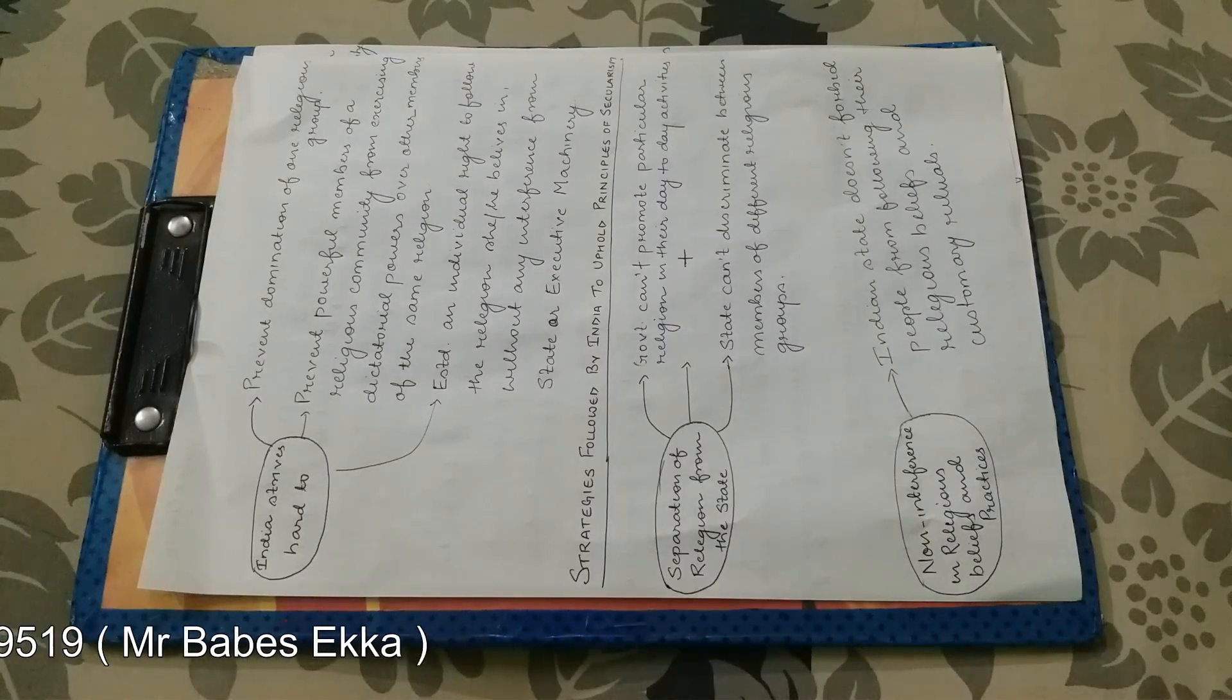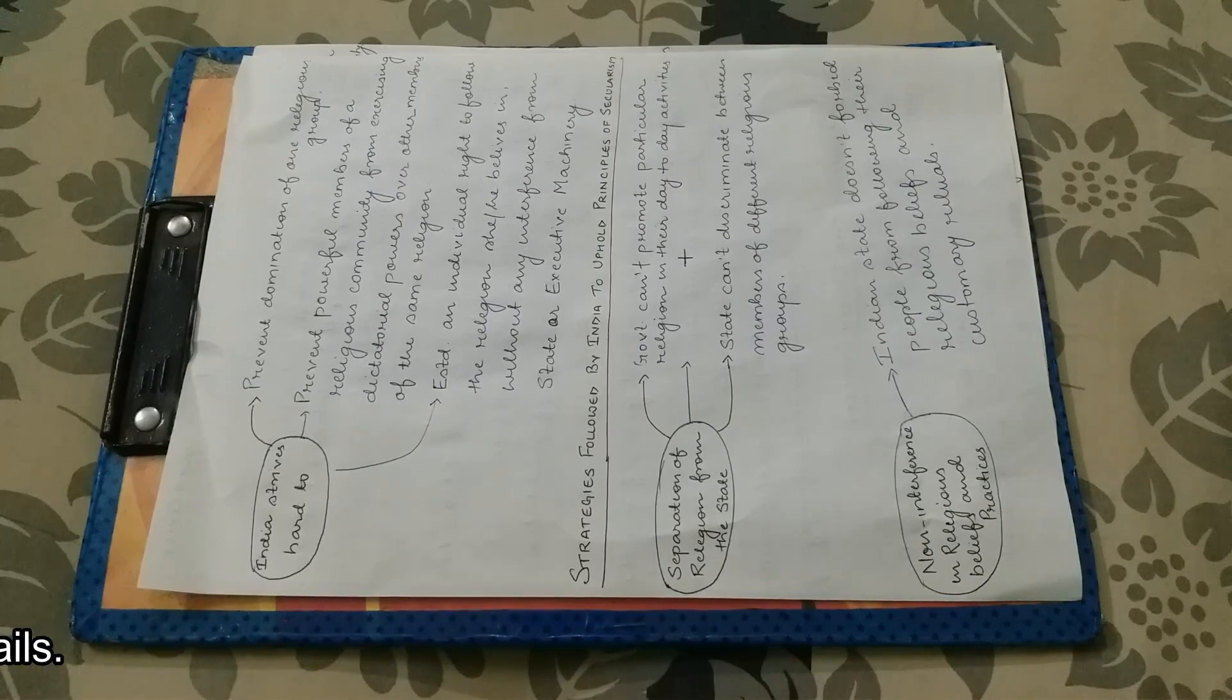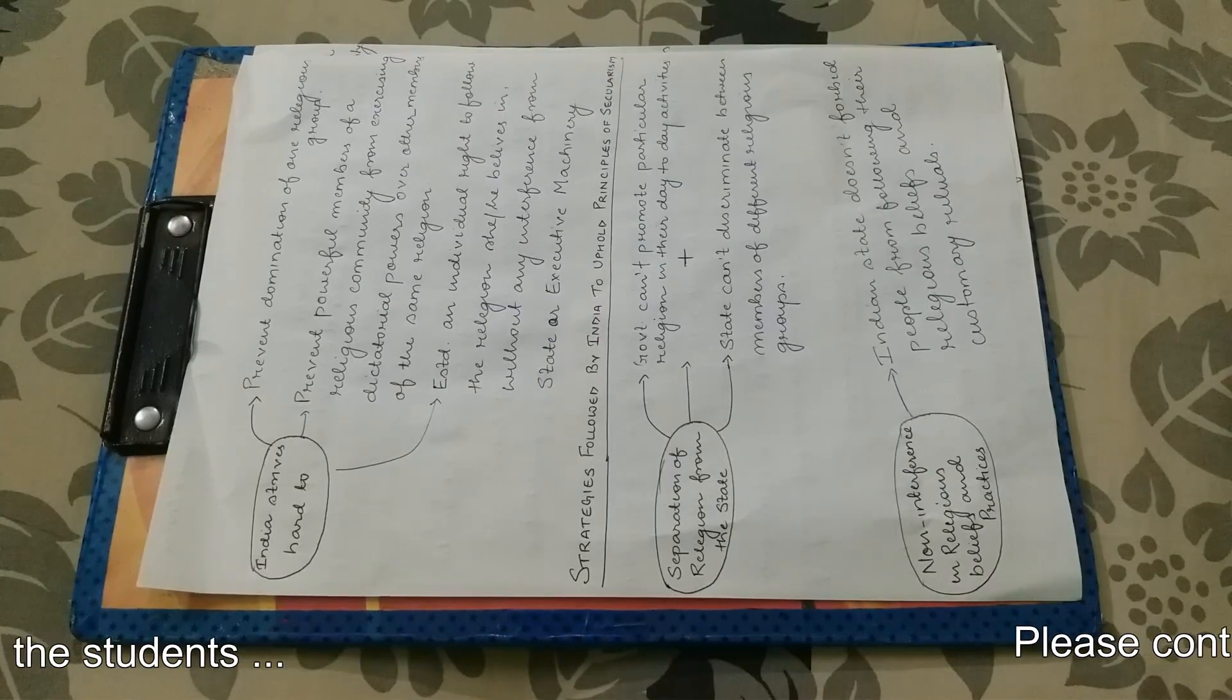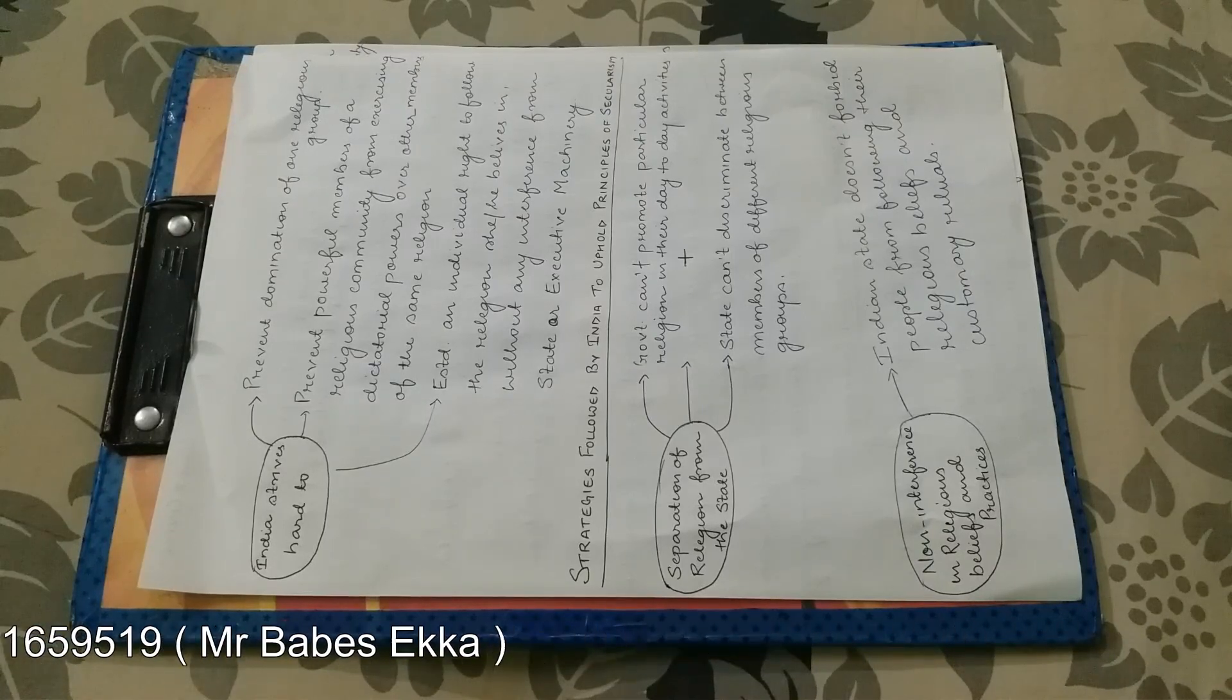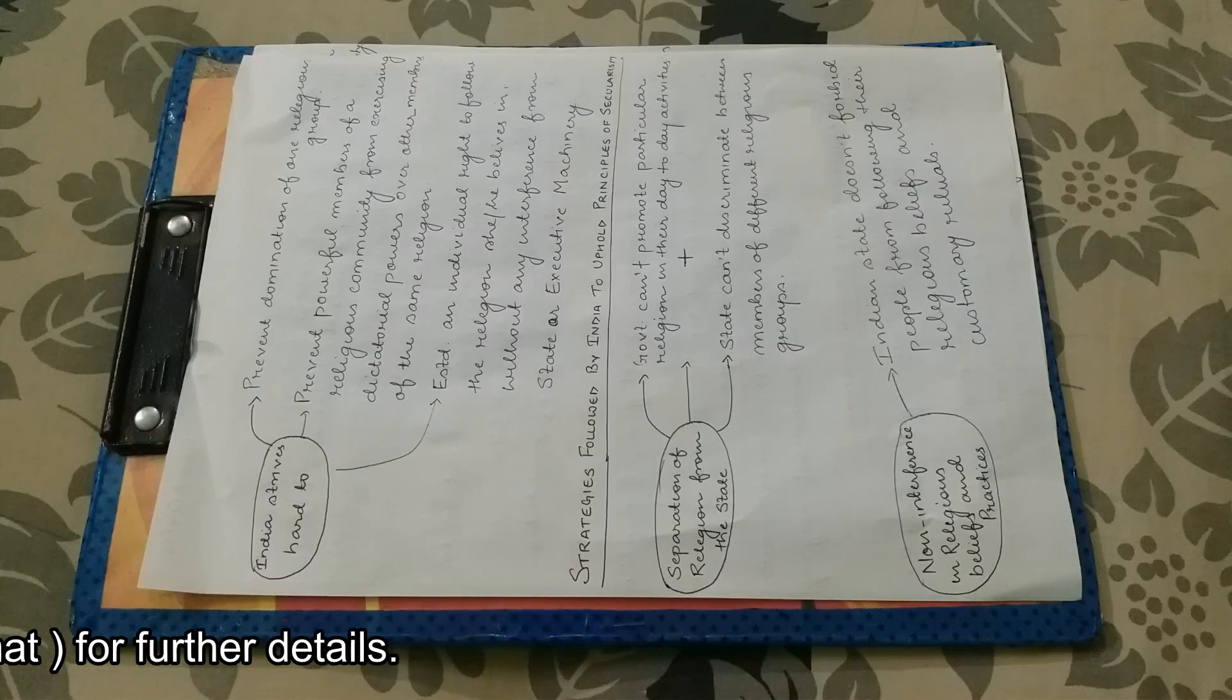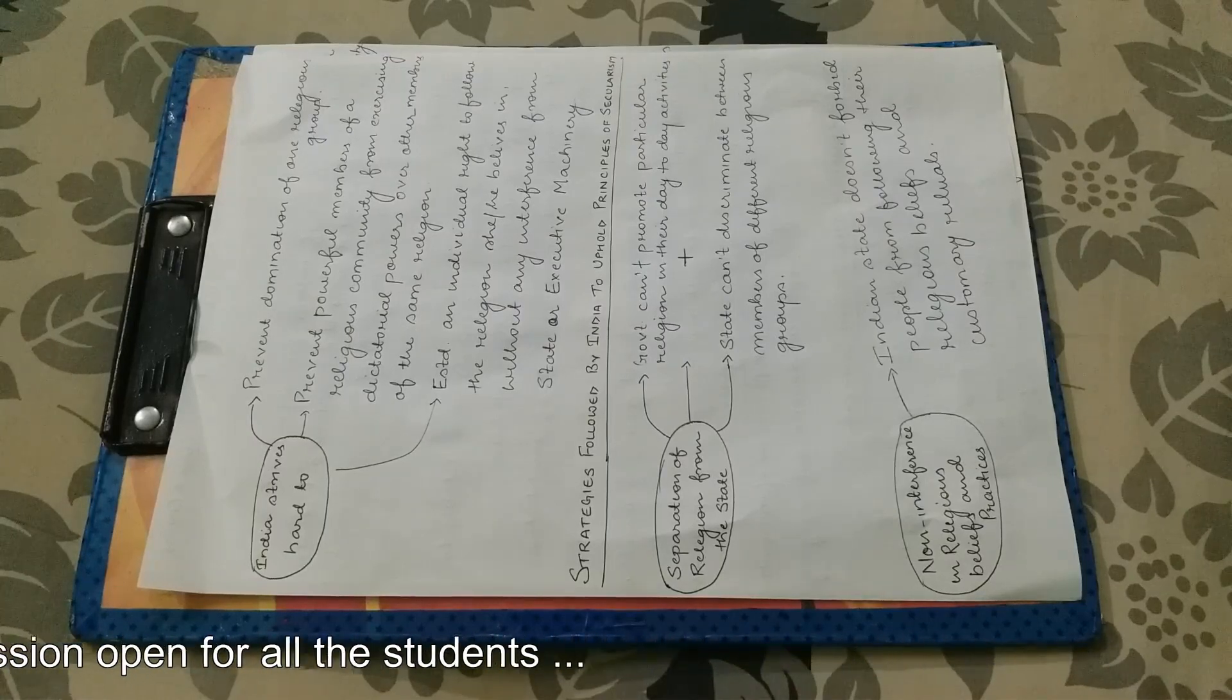Now we are going to start from a new topic, that is strategies followed by India to uphold principle of secularism. The first point is separation of religion from the state. This is the first strategy. State and religion are both separate so that there will be no conflict. Government cannot promote any religion in their day-to-day activities.